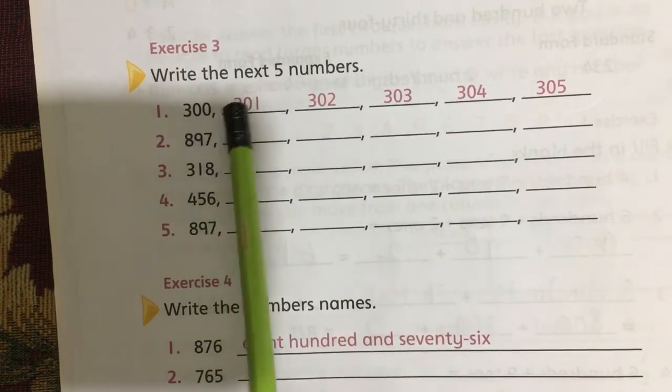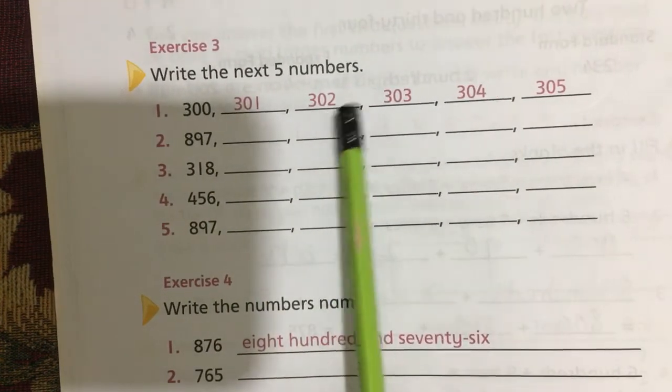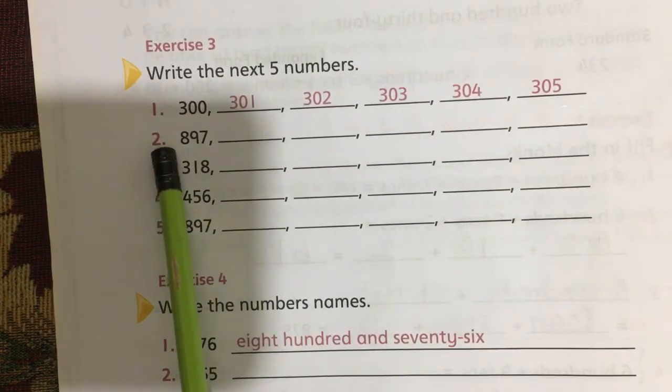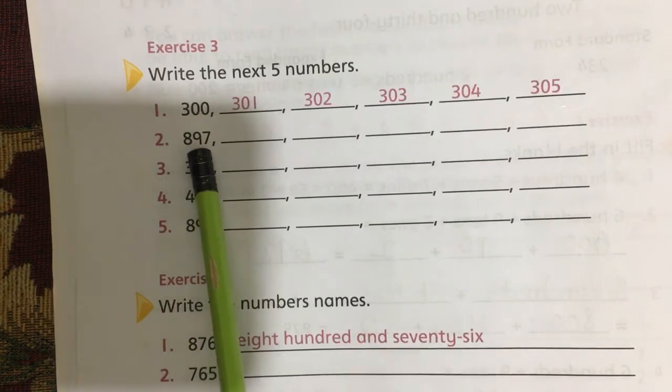Write the next five numbers. What comes after 300? 301, then 302, 303, 304, 305. Question number two is 897. What comes after 897?